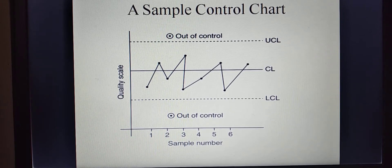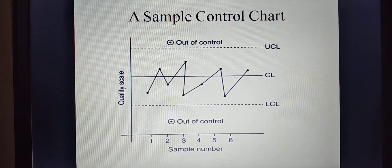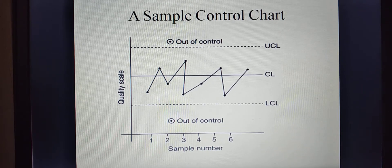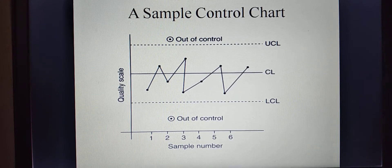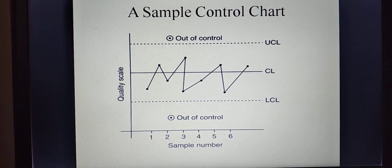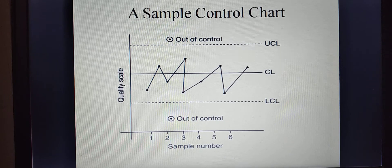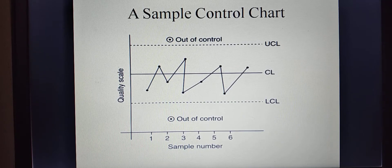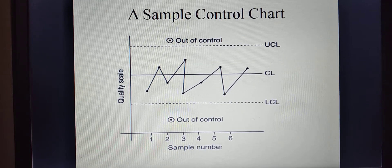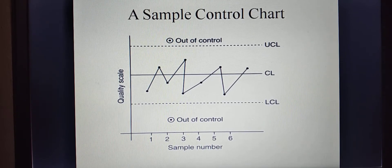If you see here, this is one sample control chart. On the x-axis we consider sample number — for example, 1, 2, 3, 4, 5, 6 and so on, up to 20 or 24. On the y-axis we consider quality scale — what is meant by quality scale: we can consider a particular measurement, for example sample mean, or sample range, or sample standard deviation, or sample proportion, etc.